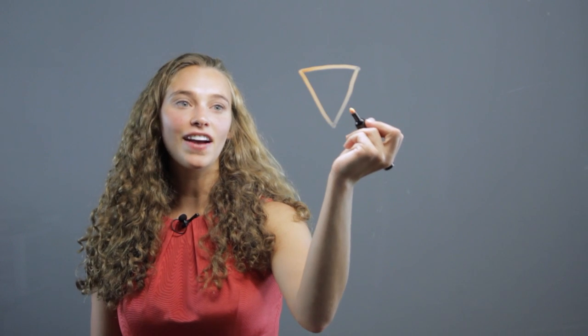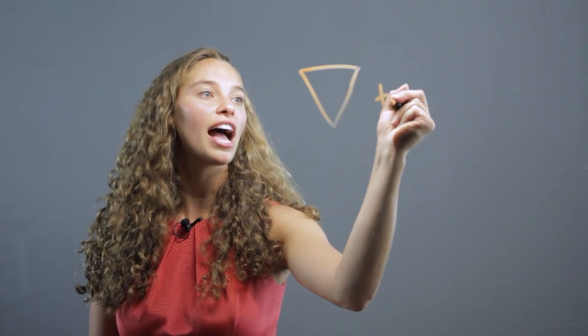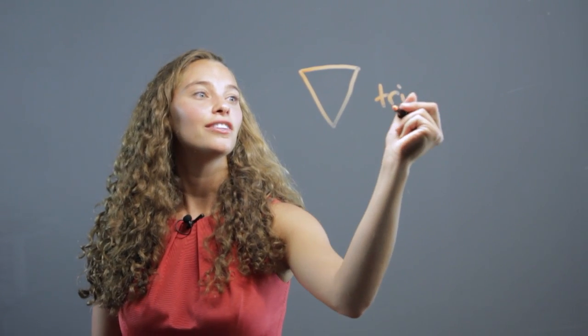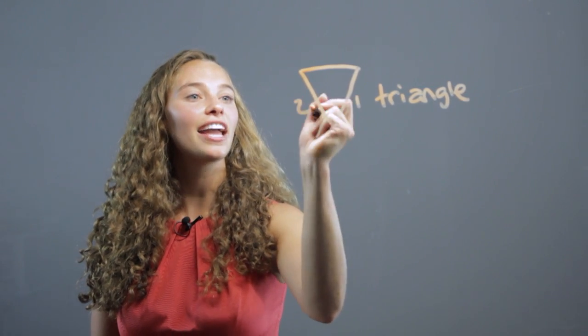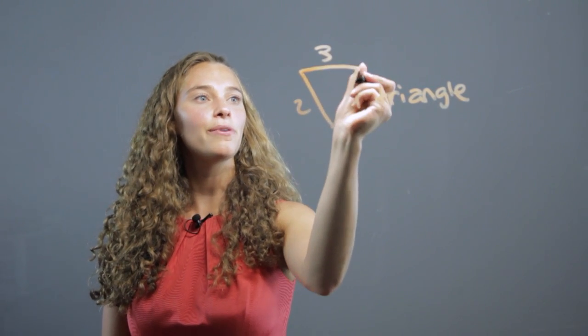A shape is something that takes up space, something you can see. It can be as simple as a line, or it can be three lines. A great way to identify this shape is we know that tri means three. So this is a triangle, because we can count three sides, or three points.